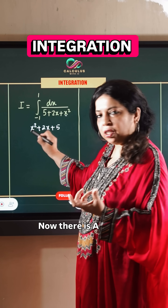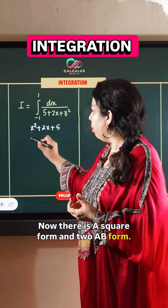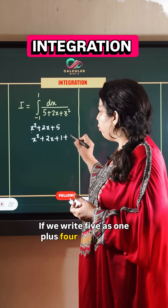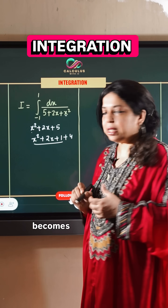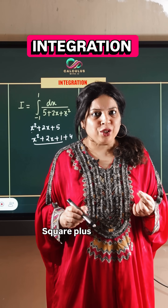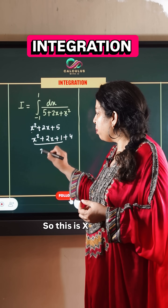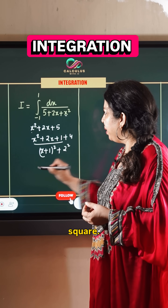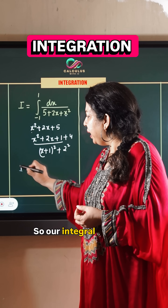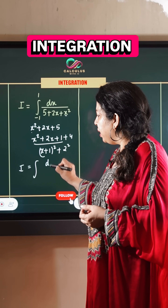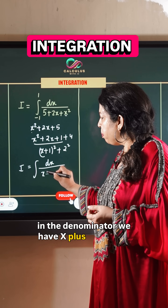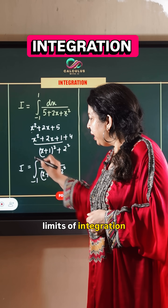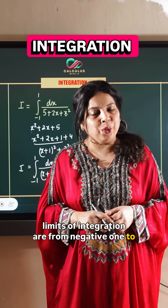We complete the square by writing 5 as 1 plus 4, giving us a squared plus 2ab plus b squared form. This becomes x plus 1 whole squared, and 4 can be written as 2 squared. So the integral has x plus 1 whole squared plus 2 squared in the denominator, with limits from negative 1 to 1.